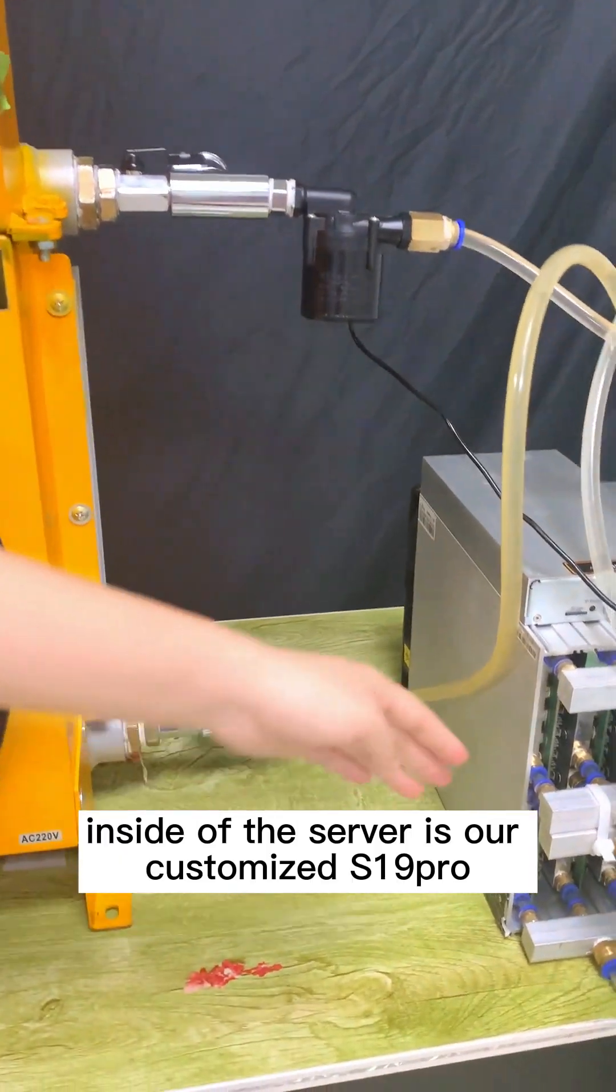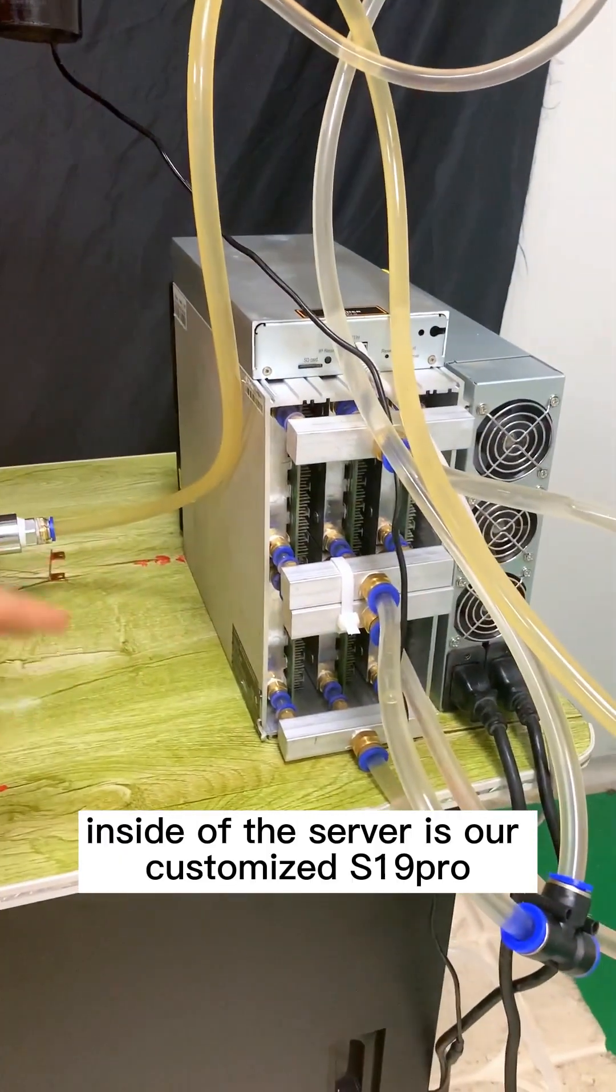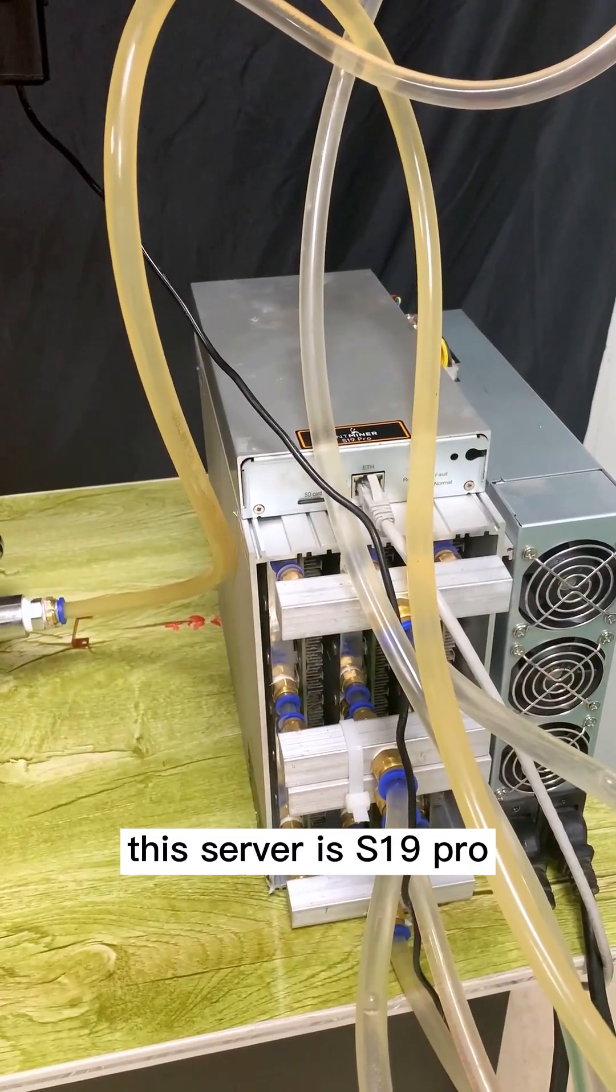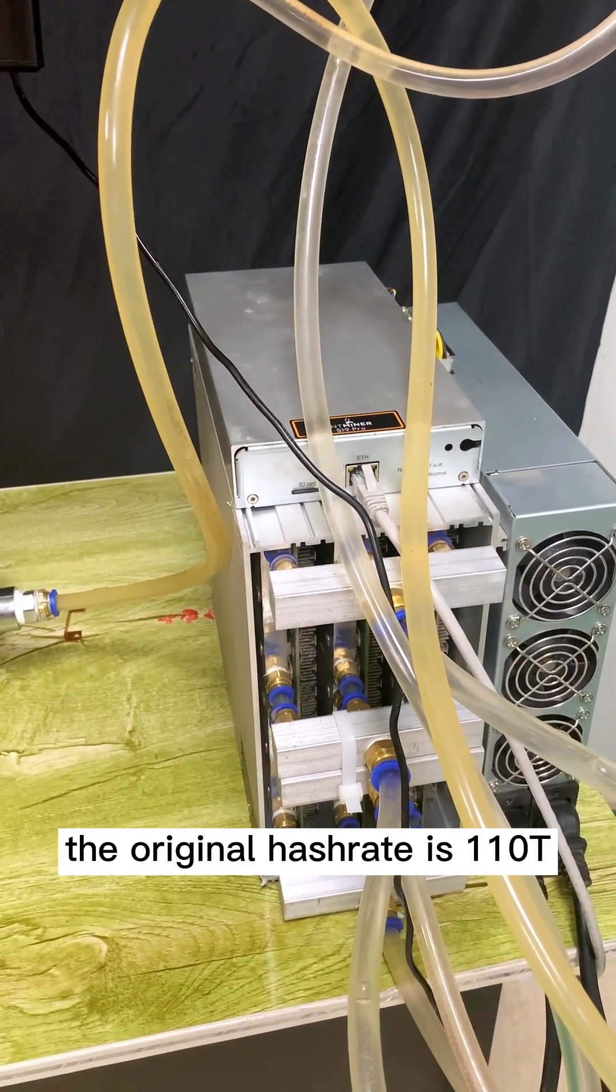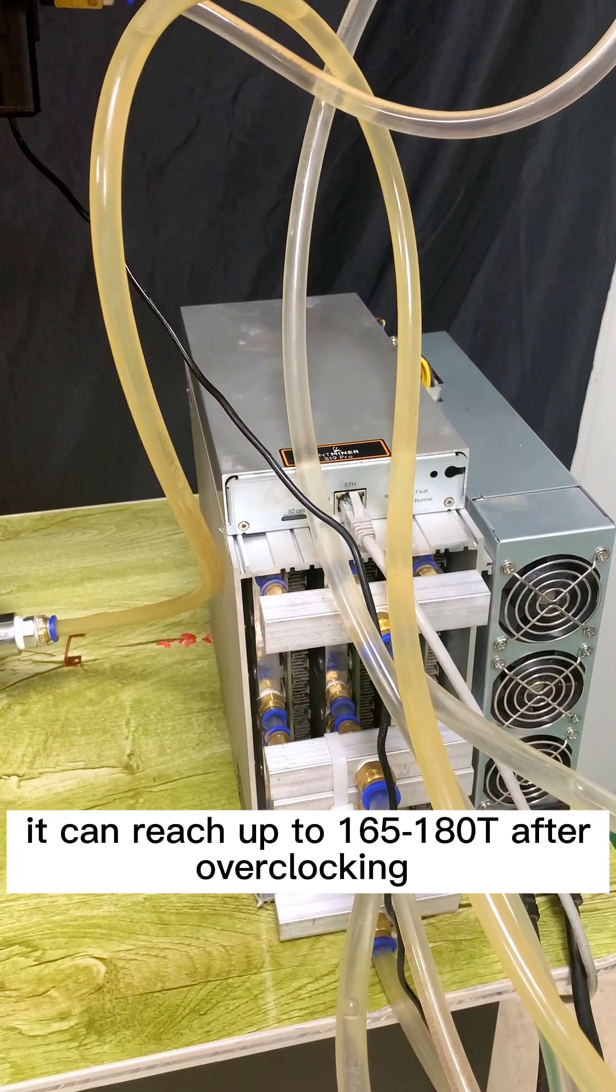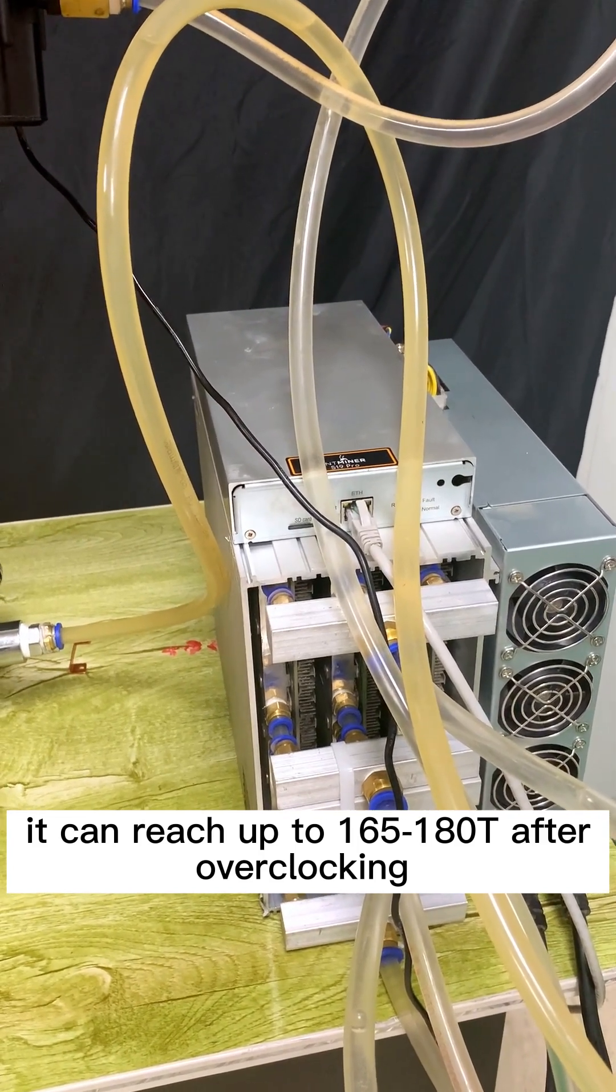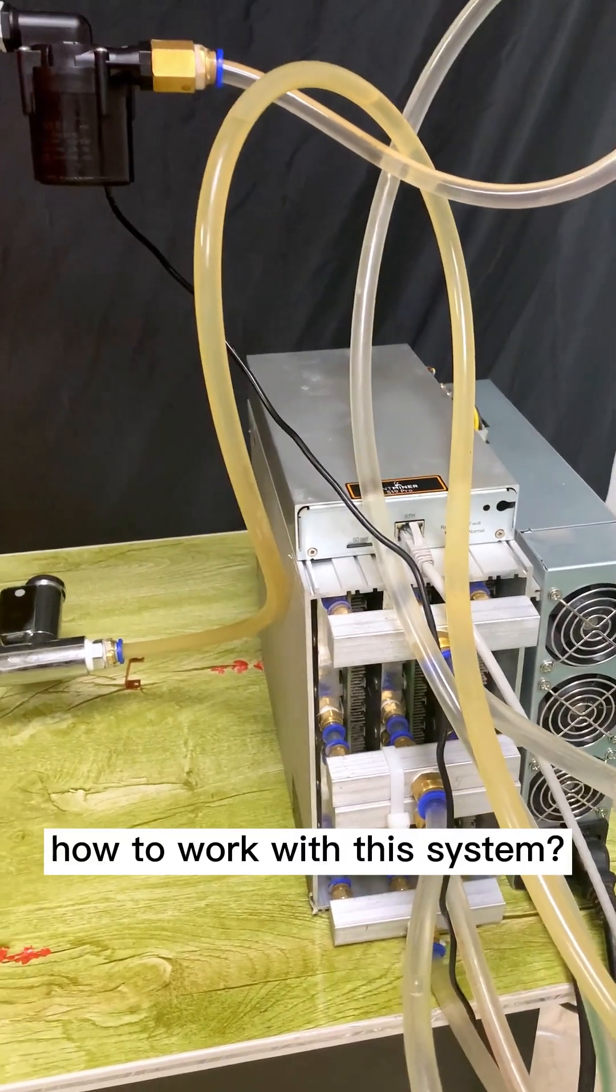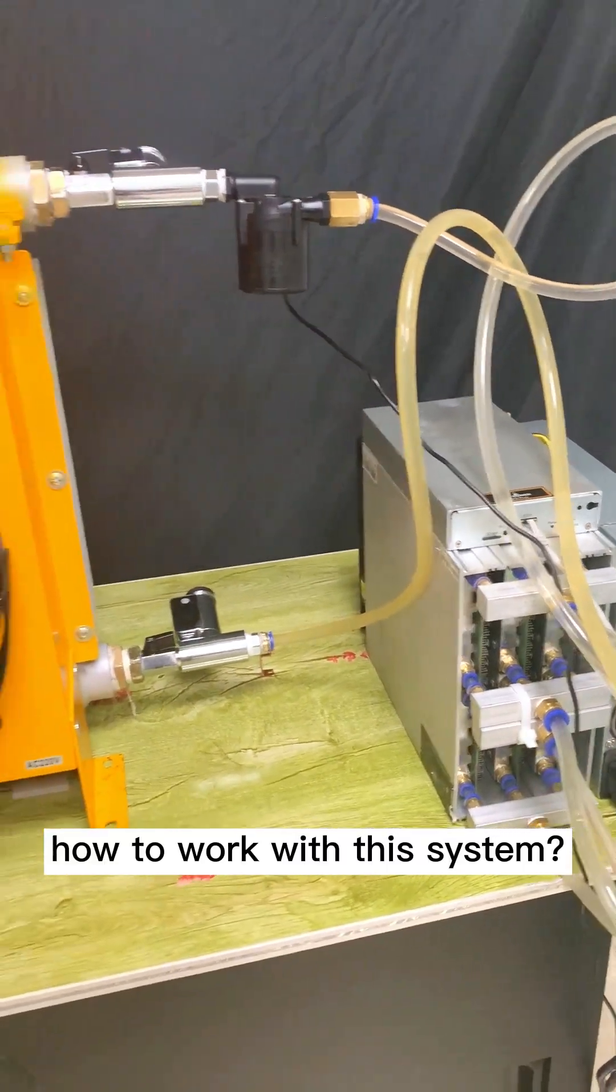Inside the server is our customized S19 Pro water cooling board. This server is an S19 Pro. The original hash rate is 110. It can reach up to 155 to 118 after overclocking.